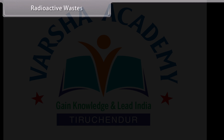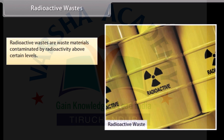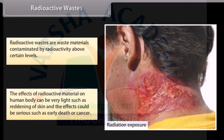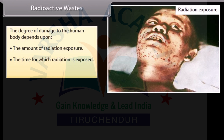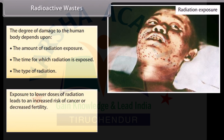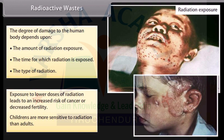Radioactive wastes are waste materials contaminated by radioactivity above certain levels. The effects of radioactive material on the human body can range from very light, such as reddening of skin, to serious, such as early death or cancer. The degree of damage depends upon the amount of radiation exposure, the duration of exposure, and the type of radiation. Exposure to lower doses of radiation leads to an increased risk of cancer or decreased fertility. Children are more sensitive to radiation than adults.